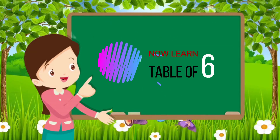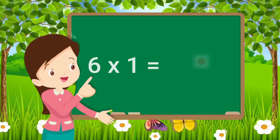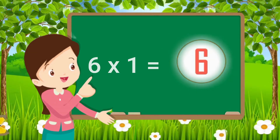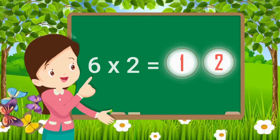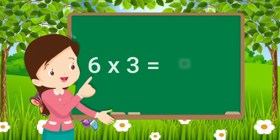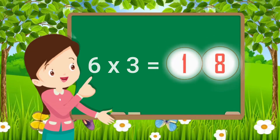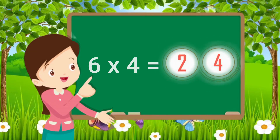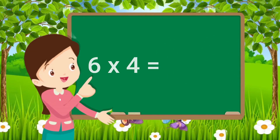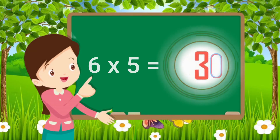Now learn table of six. Six ones are six. Six twos are twelve. Six threes are eighteen. Six fours are twenty-four. Six fives are thirty.